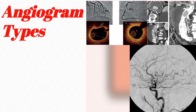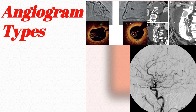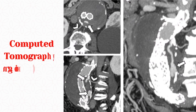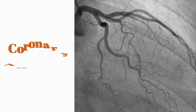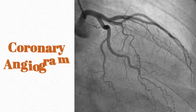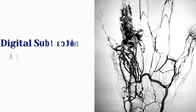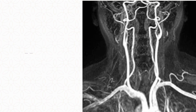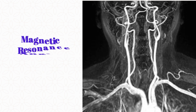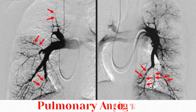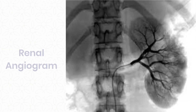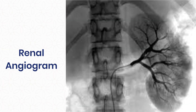Some of the most common types of angiograms are: Computed Tomography Angiogram, Coronary Angiogram, Digital Subtraction Angiogram, Magnetic Resonance Angiogram, Pulmonary Angiogram, Radionuclide Angiogram, and Renal Angiogram.